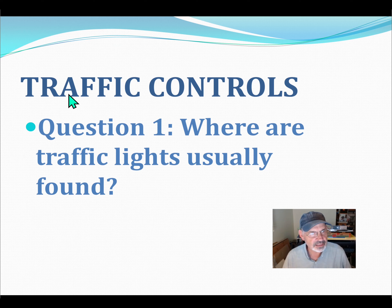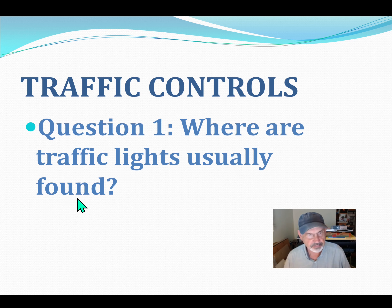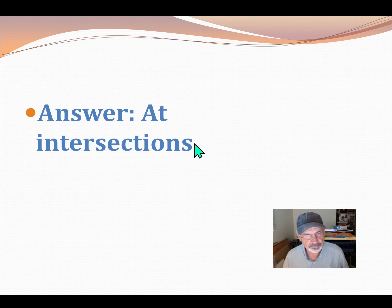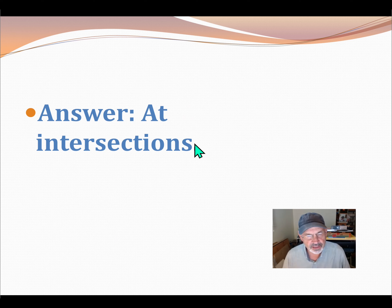Now we're talking about traffic controls. Question 1: Where are traffic lights usually found? Answer: At intersections — it's usually at intersections, though not always. They might be at a crosswalk, for example, not at an intersection.